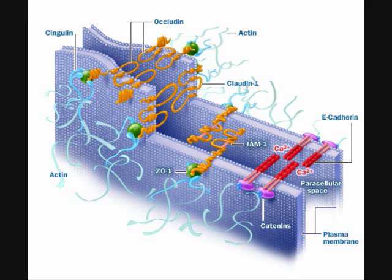In animals, there are three types of intercellular junctions. They are most common in epithelial tissue that lines the external and internal surfaces of the body, like skin. The three types of junctions are tight junctions, desmosomes, and gap junctions.